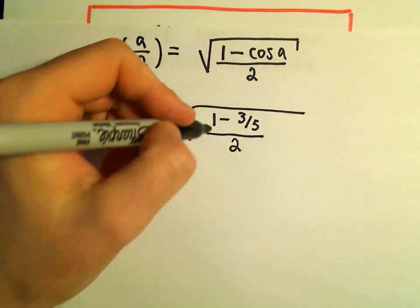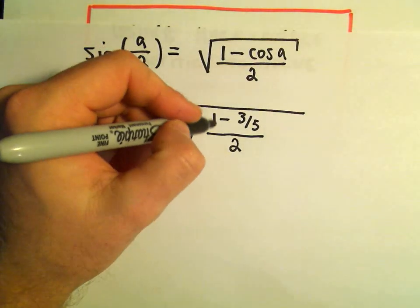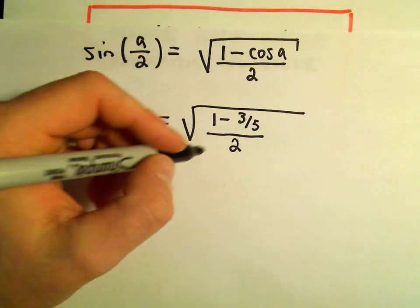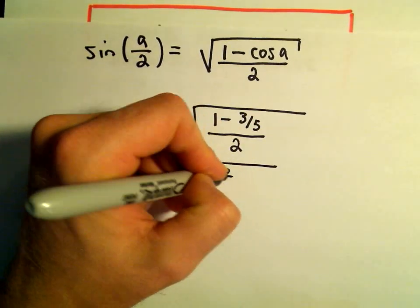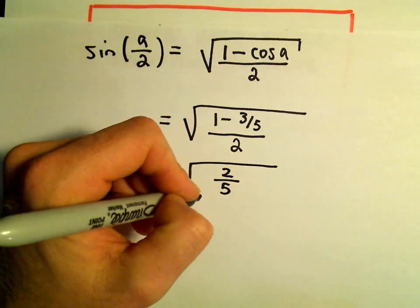In the numerator, you can write 1 as 5 over 5, 5 over 5 minus 3 over 5. And the numerator would leave us with 2 fifths, or 2 over 5.